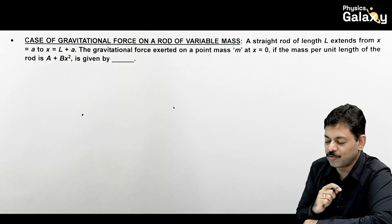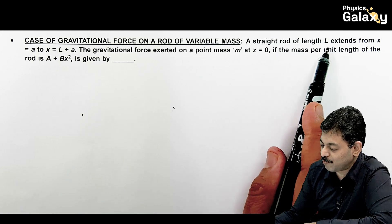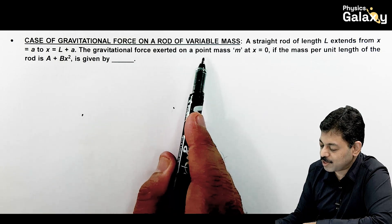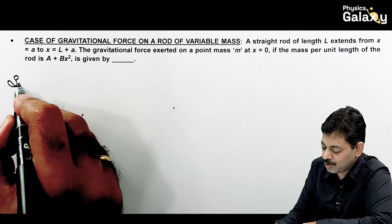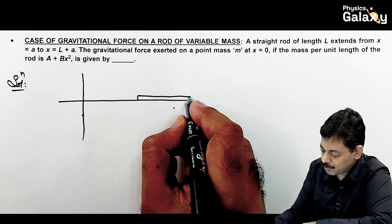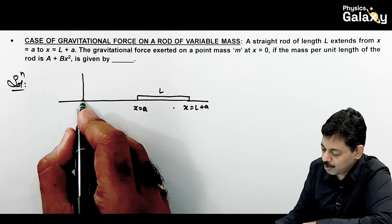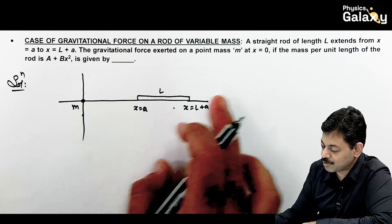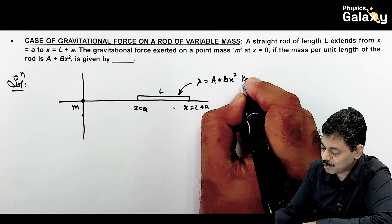Now we calculate the gravitational force due to a rod of variable mass density. A straight rod of length l extends from x = a to x = l + a. The gravitational force exerted on a point mass m located at x = 0 is required. The mass per unit length of the rod is given as λ = a + bx² kg/m.